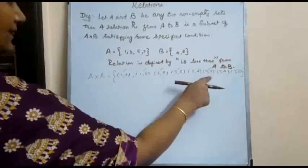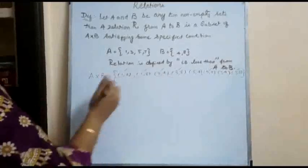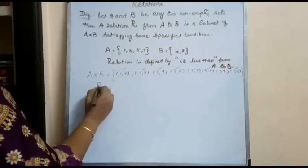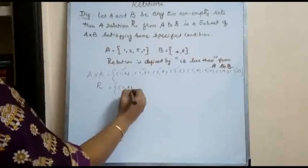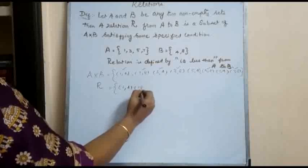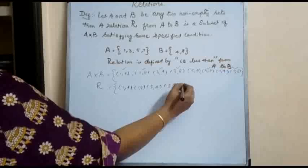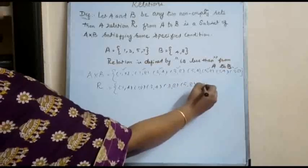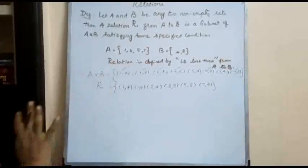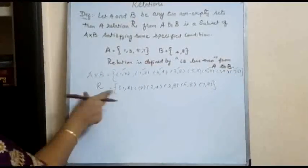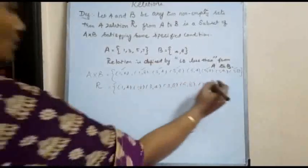5 is less than 8 — satisfies. 7 is not less than 4. But 7 is less than 8 — satisfies. So the pairs that satisfy the 'less than' relation from A to B are: (1,4), (1,8), (3,4), (3,8), (5,8), and (7,8). This method of writing as a set of ordered pairs is called the roster method.